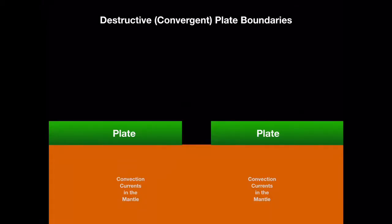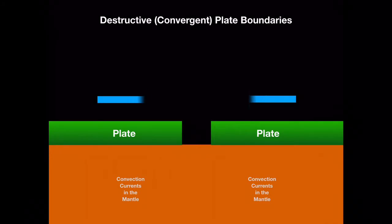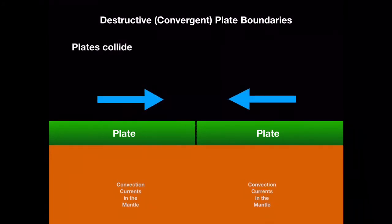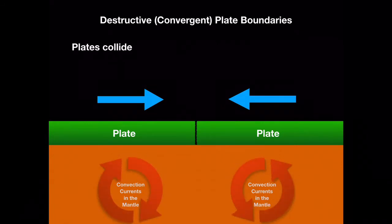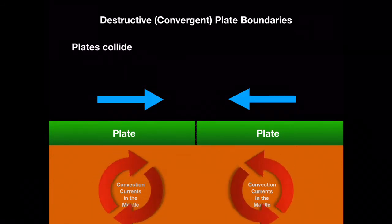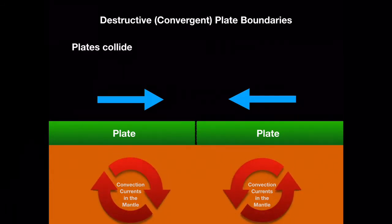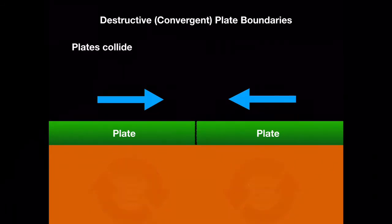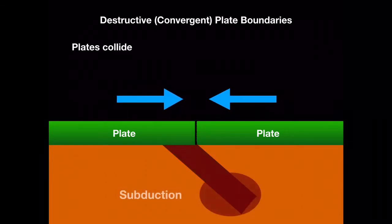At destructive or convergent boundaries, tectonic plates collide. Again, plate movement is driven by convection currents. Along these boundaries, crust is destroyed and recycled back into the mantle as magma. As they collide, the heavier plate will sink below the other. This is melted by the heat of the mantle in a process known as subduction.